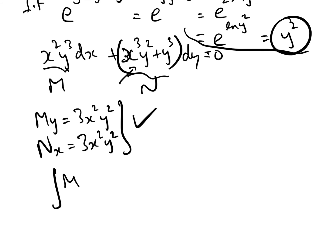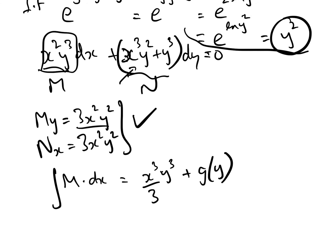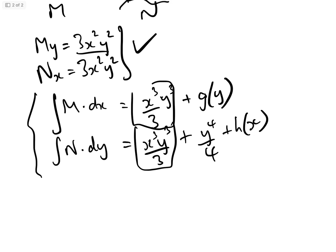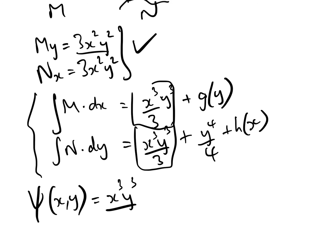Now we can integrate both M and N. Integrating M with respect to x: M is x²y³, so integrating that with respect to x gives us x³y³/3. If this doesn't mean anything, we've done this in previous videos — have a look at the description for links. The integral of N dy is x³y³/3 + y⁴/4, with h(x). Merging these two results gives us psi(x, y) = x³y³/3 + y⁴/4.